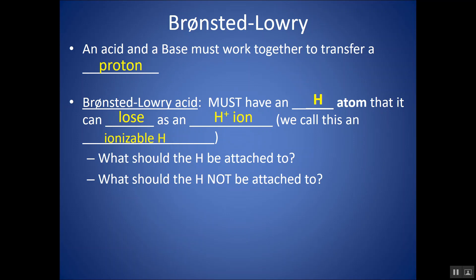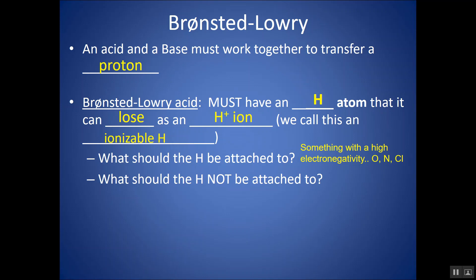The ionizable H should be attached to something electronegative, like O, N, or Cl, which attracts the electrons in the bond strongly, allowing the H to break off without its electrons. We don't want the H attached to something with equal or lesser electron attraction. The C-H bond is considered nonpolar — carbon and hydrogen have equal attraction to electrons — so that H would not break off as H+.